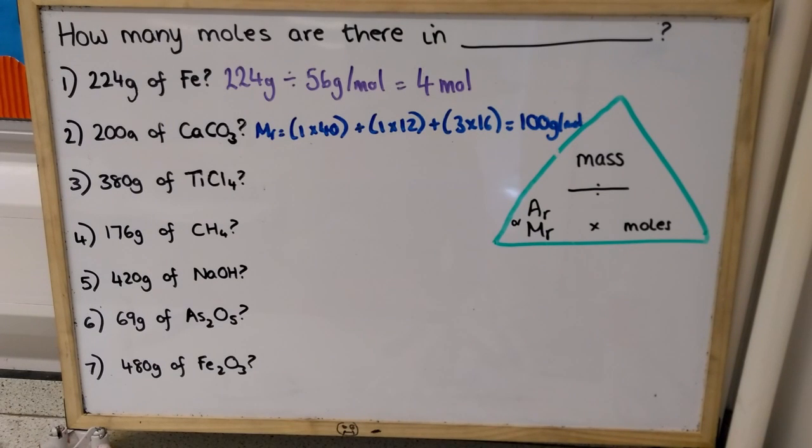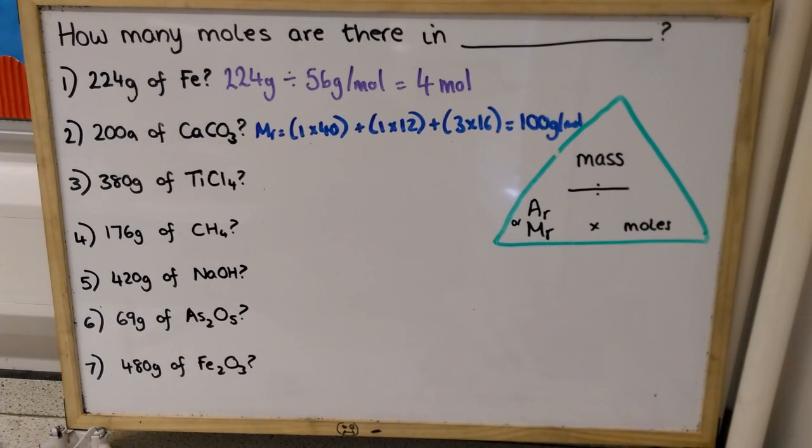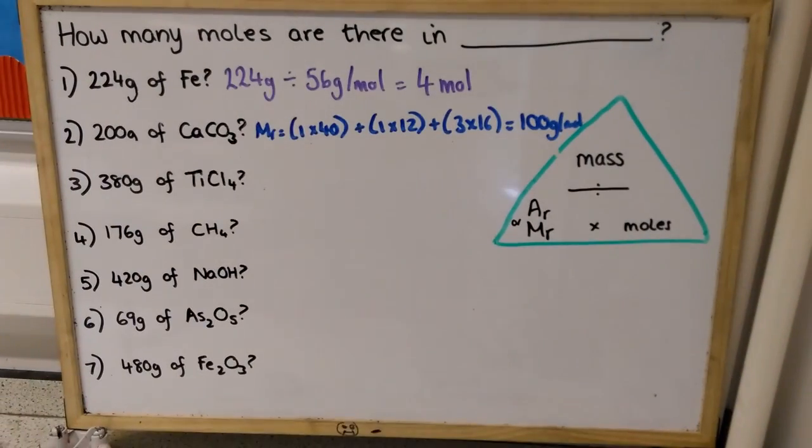So, once we know relative formula mass, the rest of the process is exactly the same as it would be for an element. We're still doing mass divided by MR. So, in this instance, 200 grams divided by 100 grams per mole.